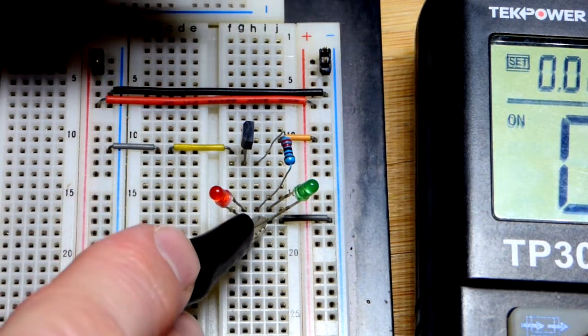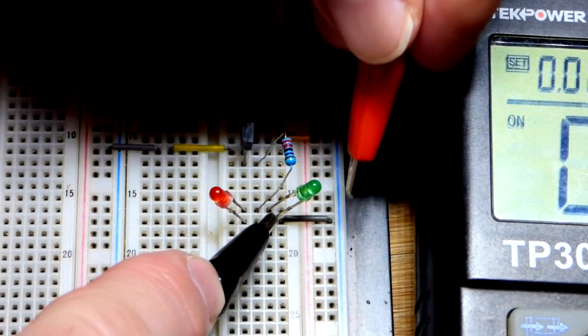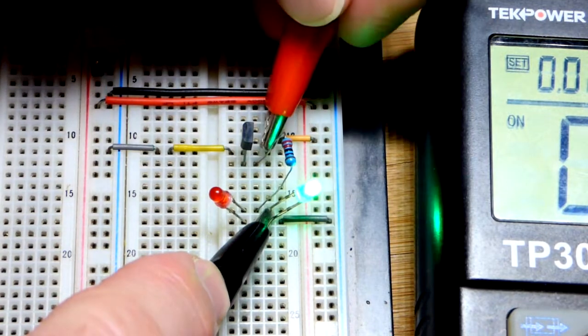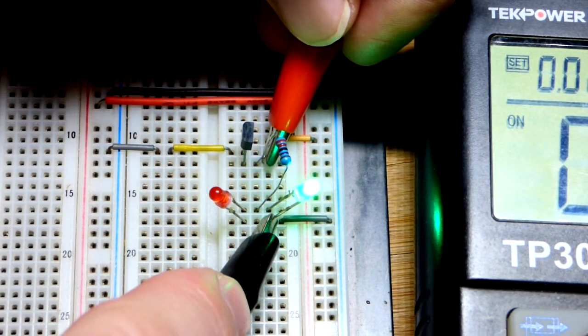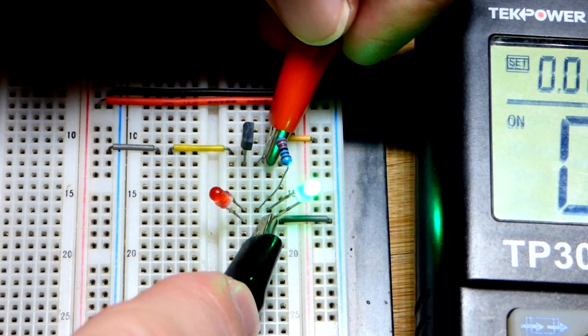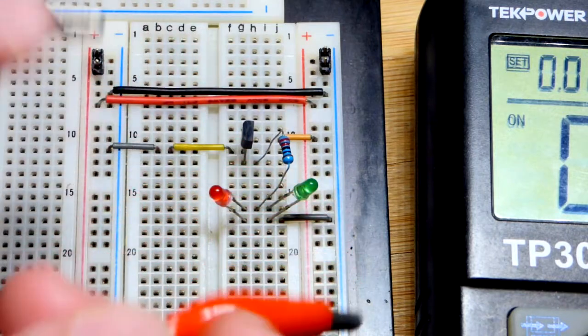When I put the polarity the correct way, you can see that gray jumper going to the negative supply goes to the resistor, bypassing the transistor. You can see the green LED lights up, letting us know we have the polarity correct.